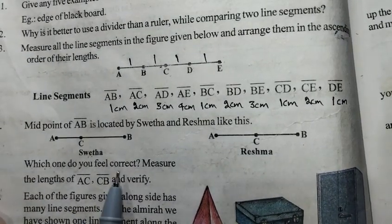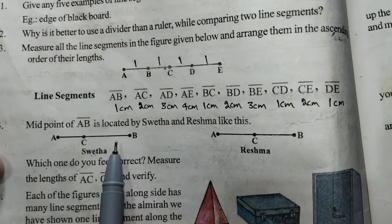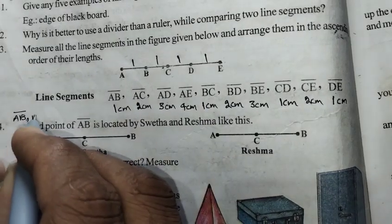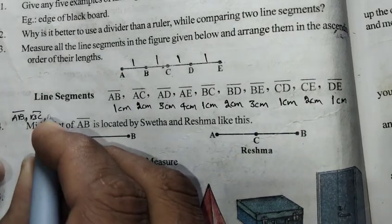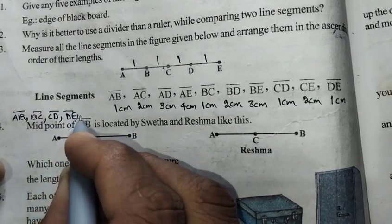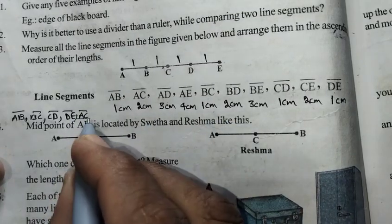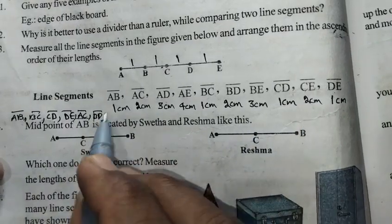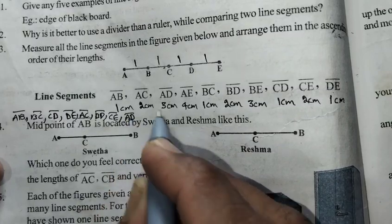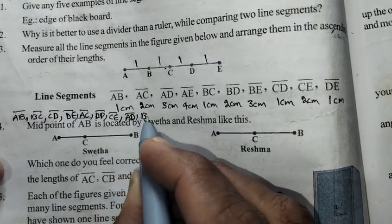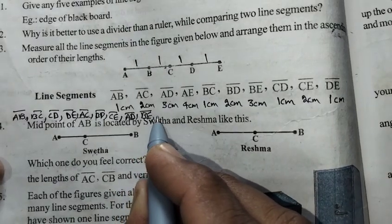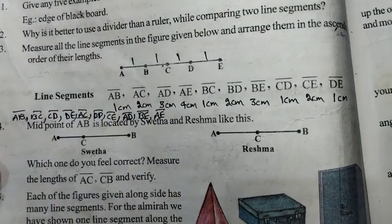Ascending order (small to large): AB, BC, CD, DE = 1 cm each; then AC, BD, CE = 2 cm each; then AD, BE = 3 cm each; and finally AE = 4 cm.